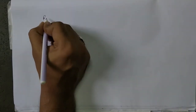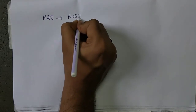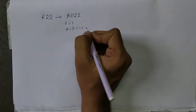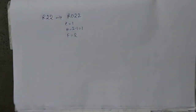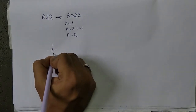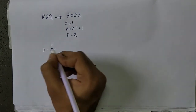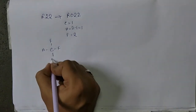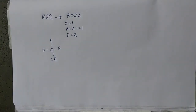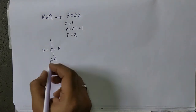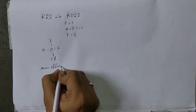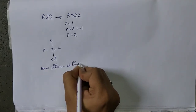Now suppose R22. R22 means R022. Carbon is 0 plus 1 equals 1. Hydrogen is 2 minus 1 equals 1. Fluorine is 2. So the structure has 1 hydrogen and 2 fluorine, which means 1 chlorine fills the remaining bond. The name is chlorodifluoromethane.